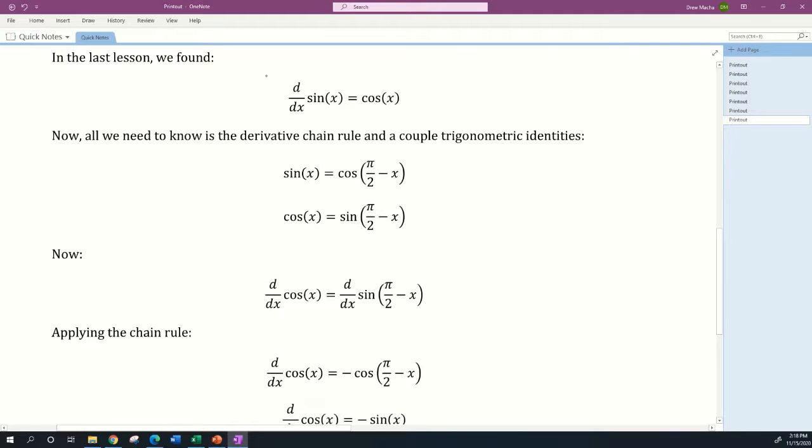In the last lesson we found that the derivative of sin(x) is equal to cos(x). Now what we need to know is the derivative chain rule and these two trigonometric identities: sin(x) = cos(π/2 - x) and cos(x) = sin(π/2 - x). These just say that the sine and cosine functions are really similar to each other but reflected and translated. These are relatively common and simple trig identities.